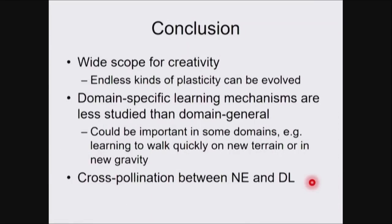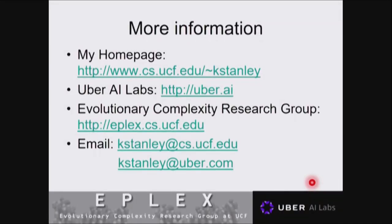In conclusion, there's a wide scope for creativity in this area. Endless kinds of plasticity can be evolved, there's a lot of biological inspiration, and domain-specific learning mechanisms are much less studied than domain-general ones. This could be important for domains like learning to walk quickly on new terrain — you don't need the full apparatus of general learning for one specific thing related to your existing expertise. Finally, I think it's nice to see cross-pollination between different areas. Things that originated in evolution — where you don't have to be differentiable — can naturally cross-pollinate into conventional deep learning once we get a handle on how these mechanisms work.